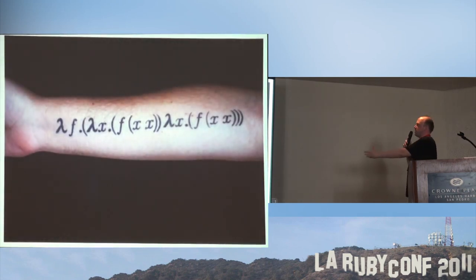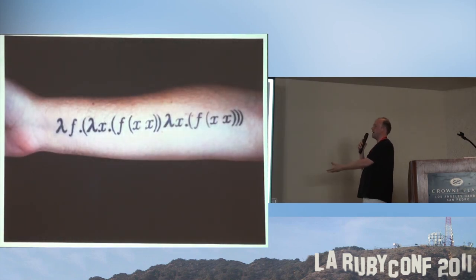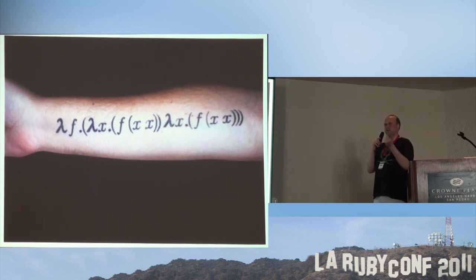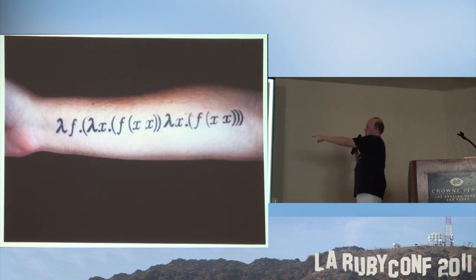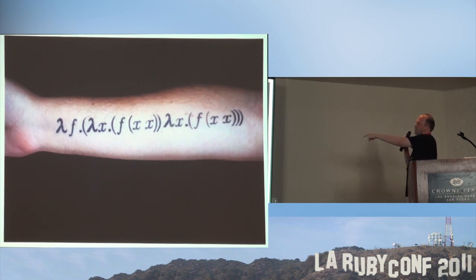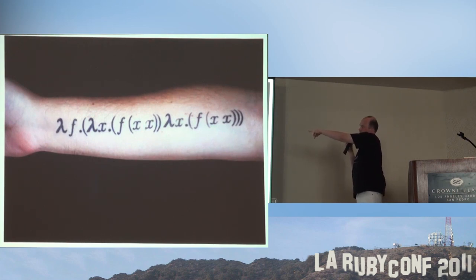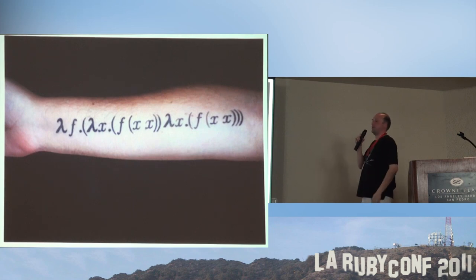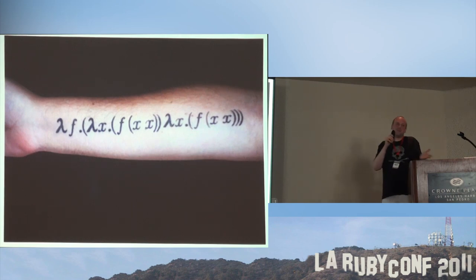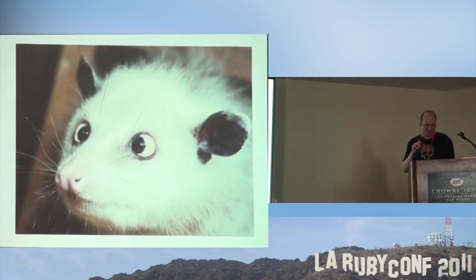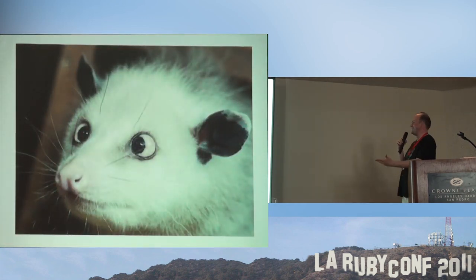This is an example of the fanaticism that Lisp inspires. Someone earlier mentioned the Y Combinator. This is the Y Combinator in actual Lambda Calculus format, which is identical to Lisp format with the exception of the symbols being different — you can write a Lambda on your arm if you're sufficiently motivated.